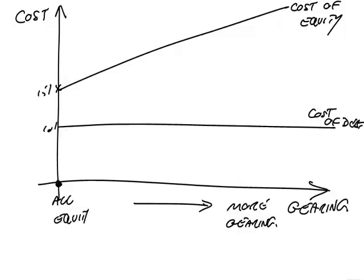When they put the two together, they said: as you bring in more and more cheap debt, your weighted average cost of capital — of course, if you're all equity, your weighted average is the cost of equity. But as you bring in more and more cheap debt, that cheap debt is pulling down your weighted average cost. However, the equity is costing more, which is pushing up the weighted average. But they found that if you ignore tax, the two effects cancel out — the weighted average cost of capital stayed constant.